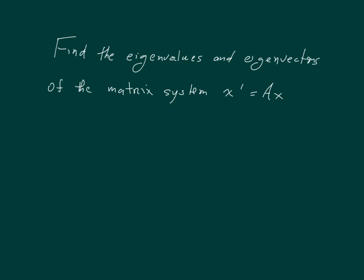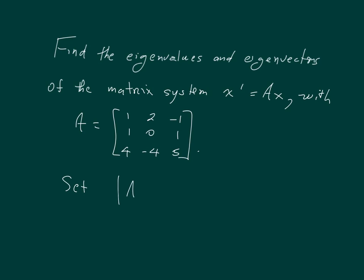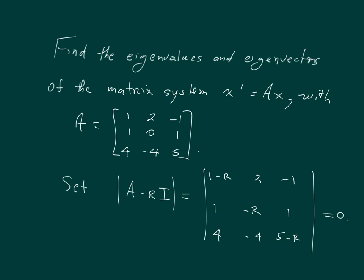Let's show how to find the eigenvalues and eigenvectors of a matrix system X prime equals AX when the matrix A is 3 by 3. As with 2 by 2 matrices, when we're trying to find the eigenvalues and eigenvectors, we set the determinant of A minus R times I equal to 0. We subtract R down the main diagonal of the matrix.